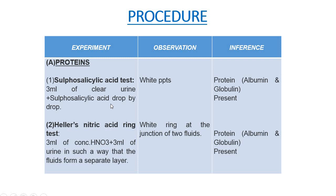For these procedures, we can either take the urine sample given by your teacher or collect a fresh urine sample. For Heller's nitric acid ring test, we take 3 ml of concentrated nitric acid and add 3 ml of urine in such a way that the fluids form separate layers. If we observe a white ring at the junction of the two fluids, it shows the presence of proteins — albumin and globulin — in the urine sample.